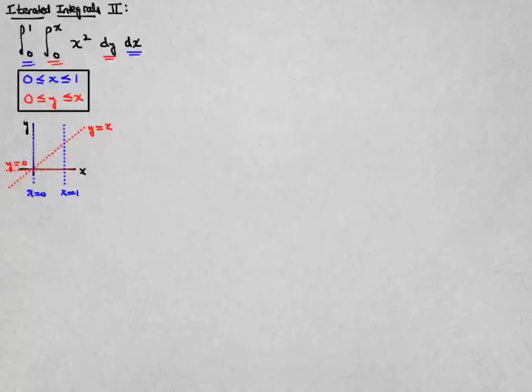Now I'm going to draw the corresponding values of y that we see, y equal to 0, y equal to x. So y equal to 0 is the horizontal x-axis, and y equal to x is that diagonal line.